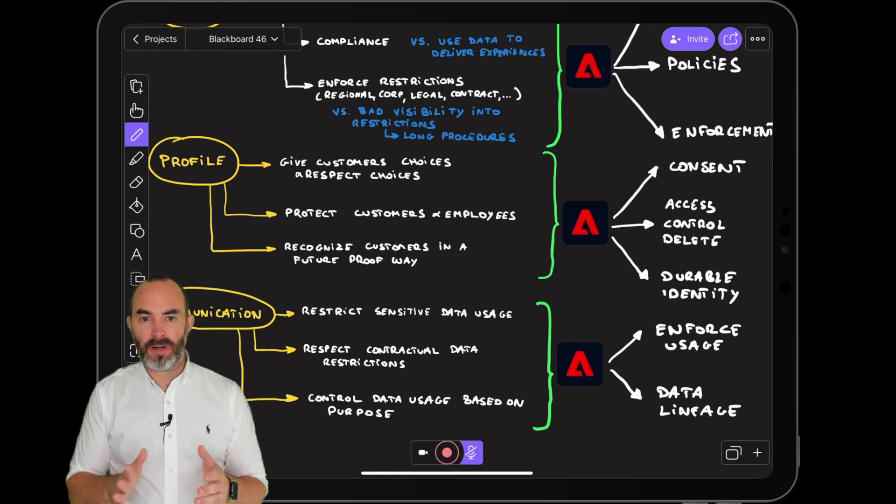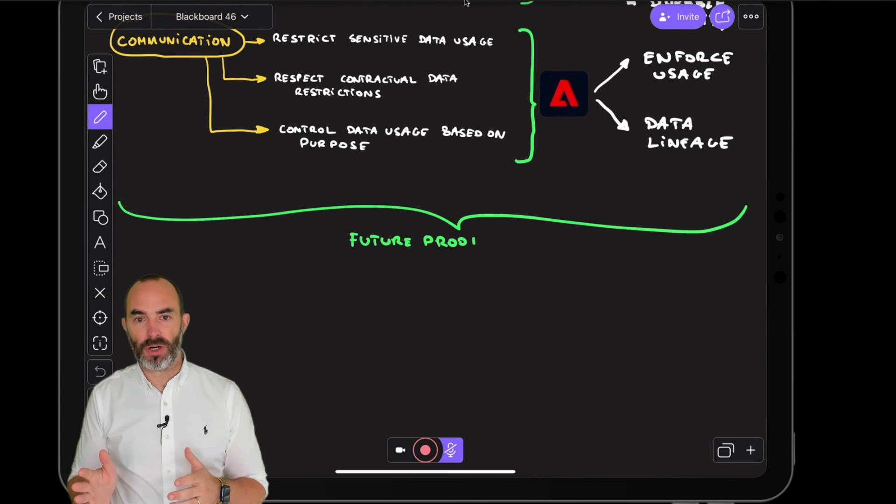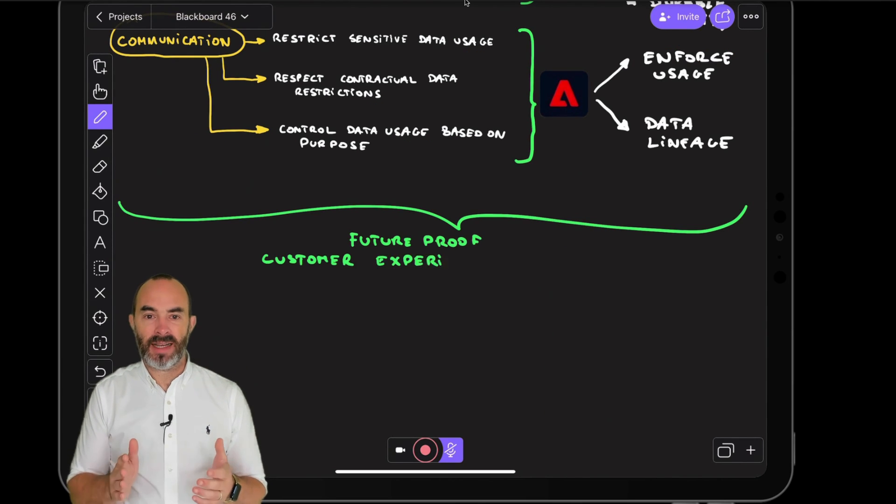To design and deliver exceptional customer experiences tomorrow you need to clean up yesterday's legacy mess of poorly integrated point solutions with the goal of implementing a single platform that combines data, profile, content and communication into one ecosystem. That platform will then give you the possibility to put the customer in the center of everything to personalize the customer experience everywhere online and offline using the same data and intelligence in real time.